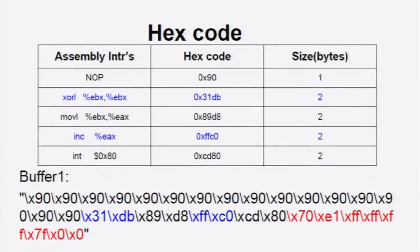One important thing to note is that we had a bunch of noop instructions at the beginning of the buffer 1 string. This was because an attacker may not precisely know the exact target location where he should insert his malicious code. That is why he inserts a bunch of noop operations, so that the target area for the attacker increases, and even if he misses by one or two memory locations either above or below, his malicious code can still execute.